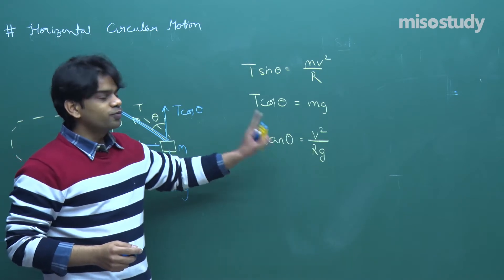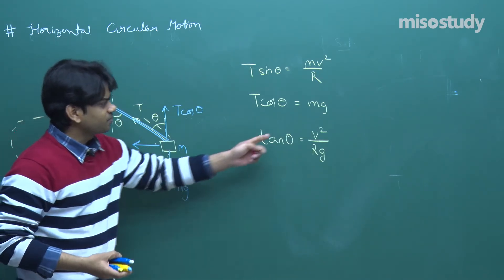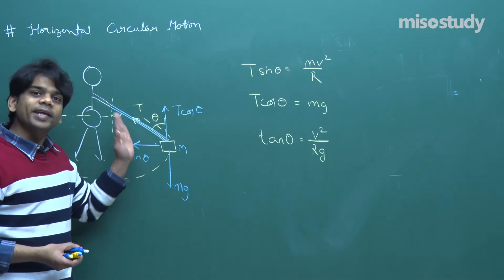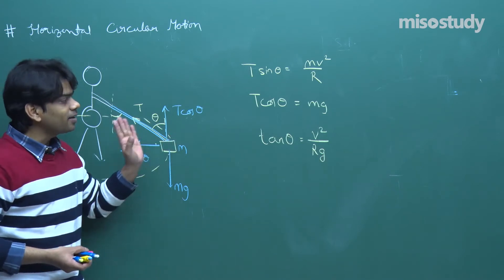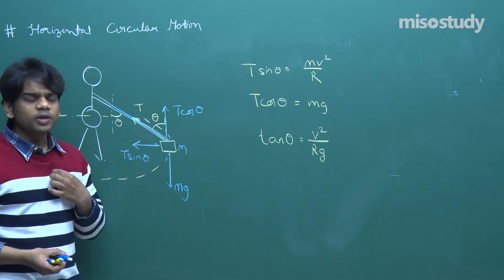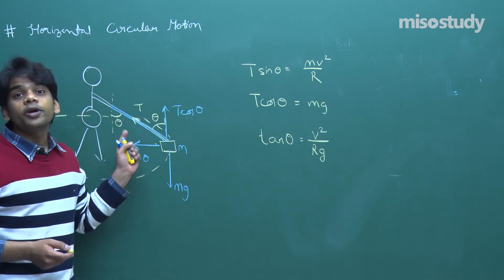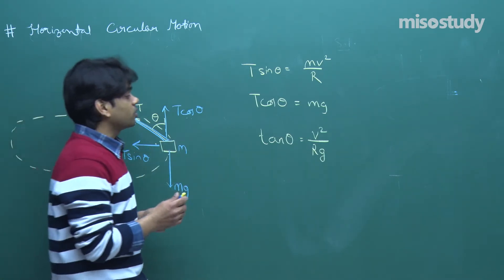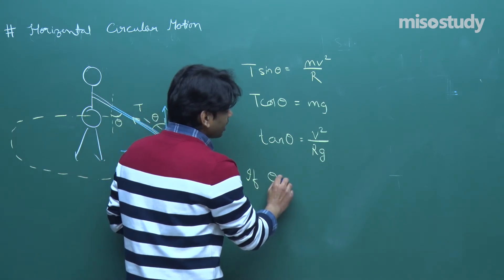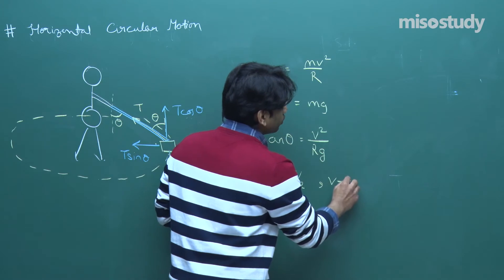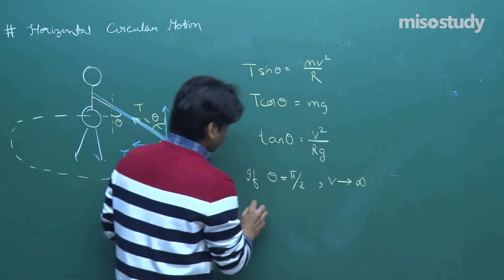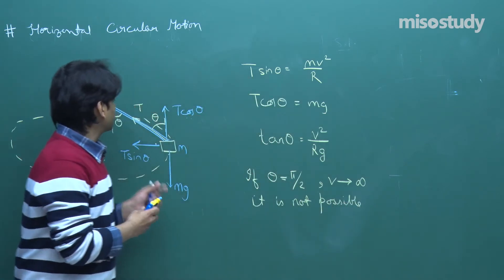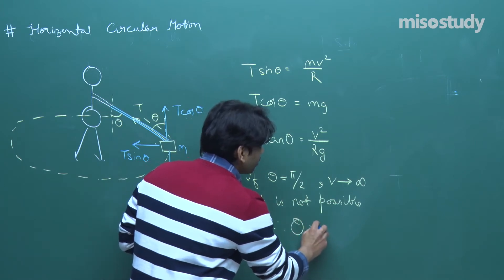From tan θ = v²/(rg), if you increase speed, θ must increase. For θ to equal π/2 (perfectly horizontal), v would need to be infinite — which is impossible. Therefore θ can never equal π/2, and we conclude: you cannot rotate a stone in a perfectly horizontal circle while whirling it with a string. It is not possible.